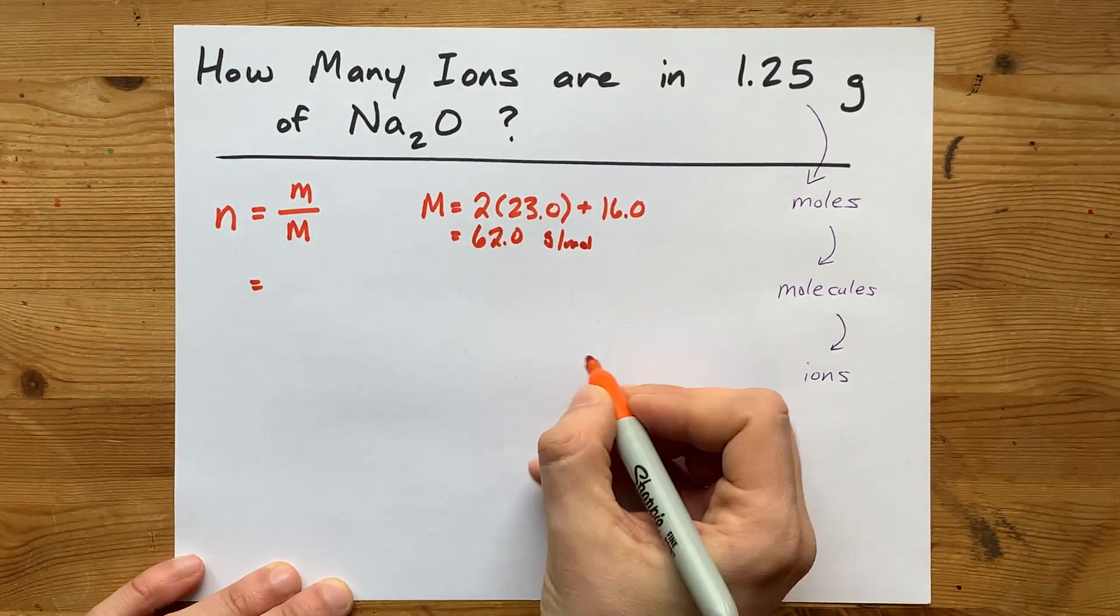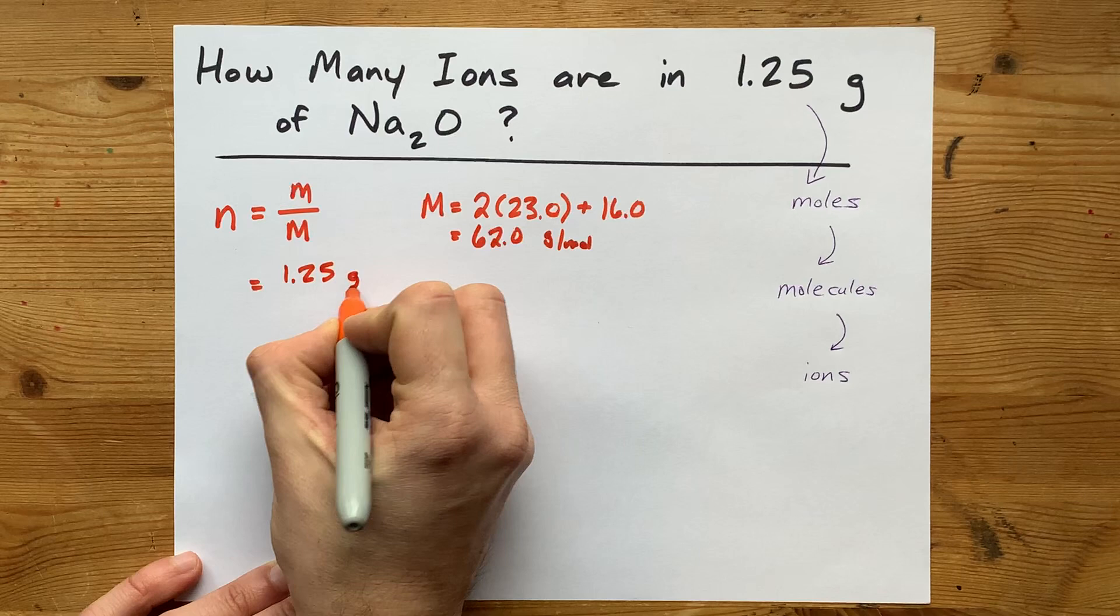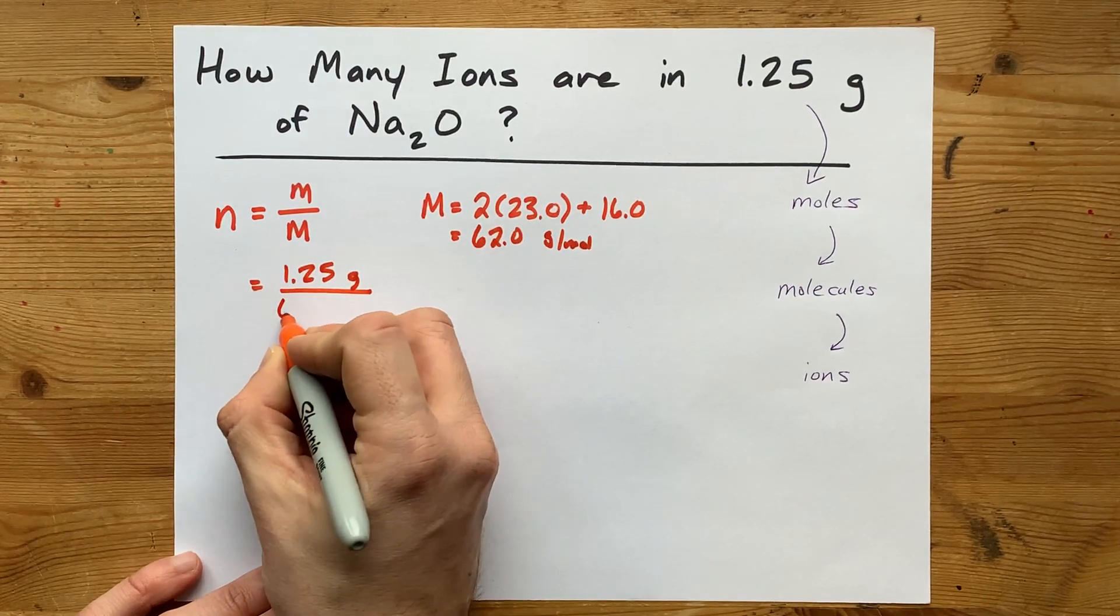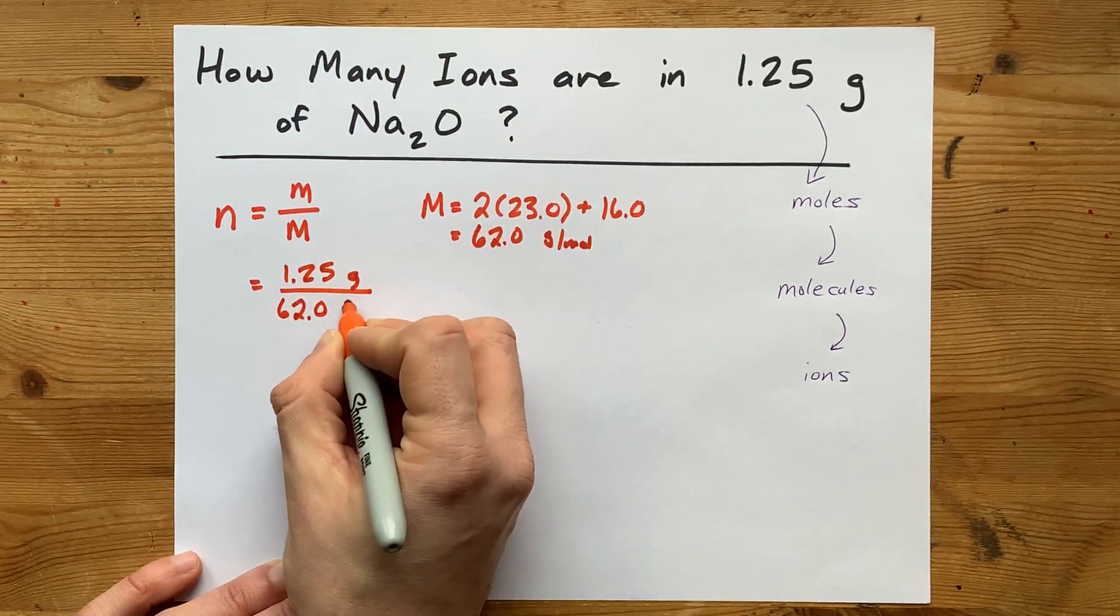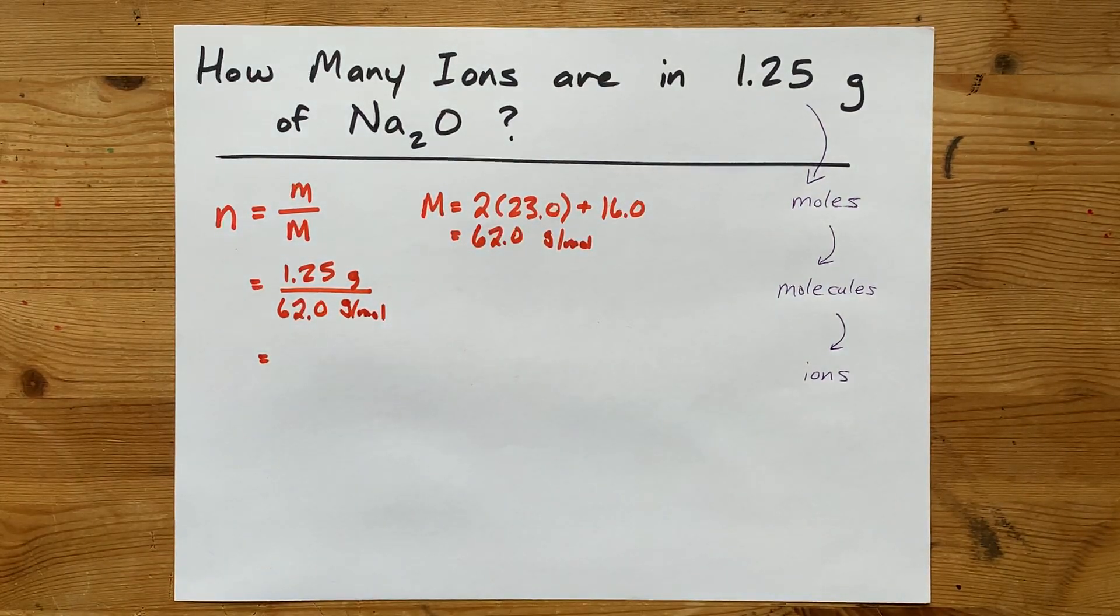Now, I'm going to take grams, 1.25, and divide it by molar mass, 62. Now, I'm going to write my units here. I don't know if your teacher requires that or not.